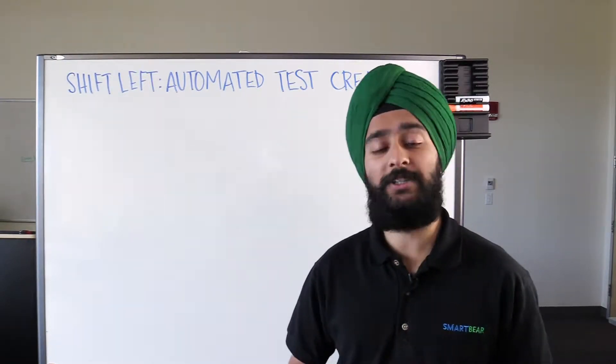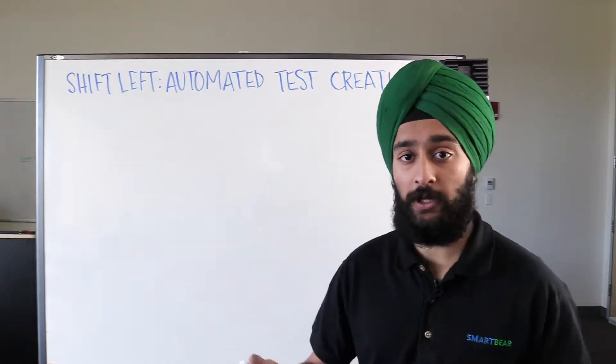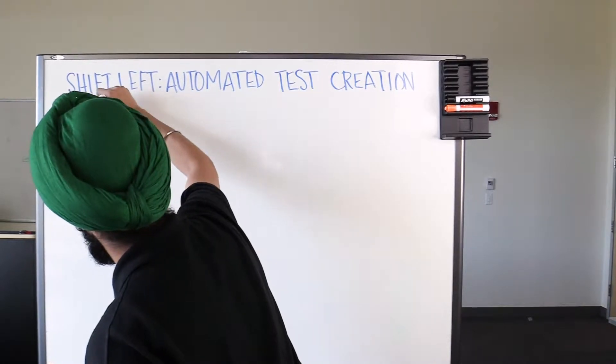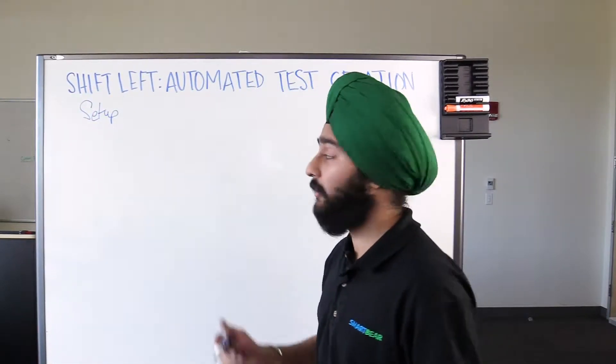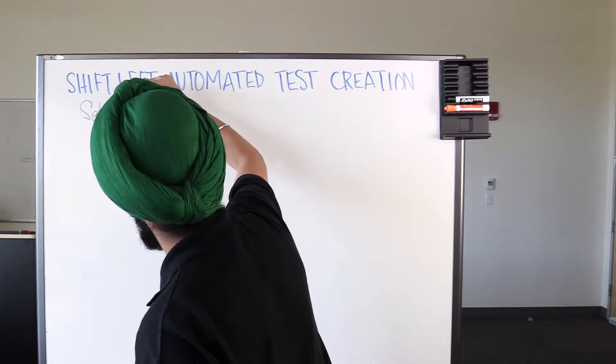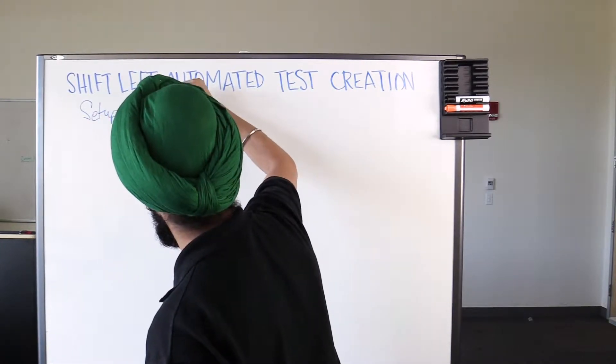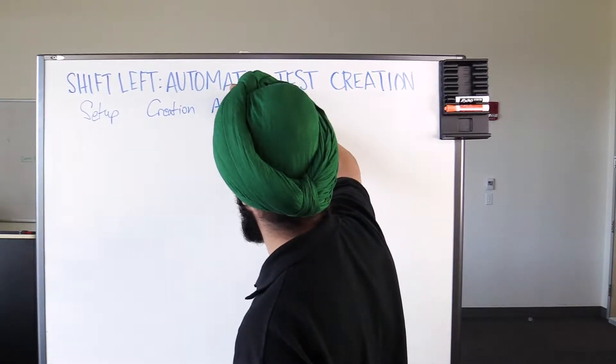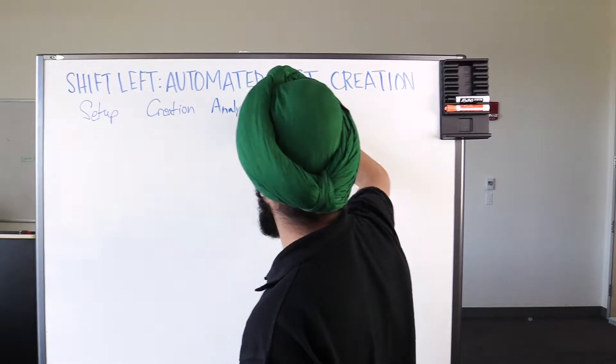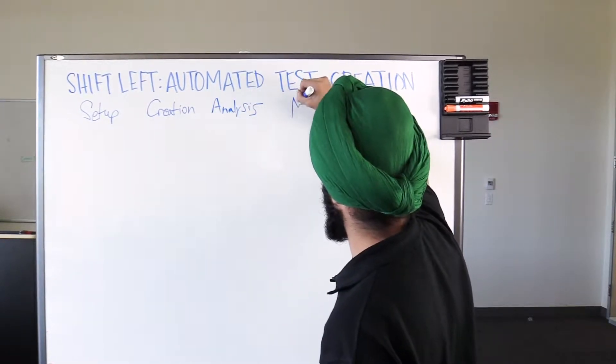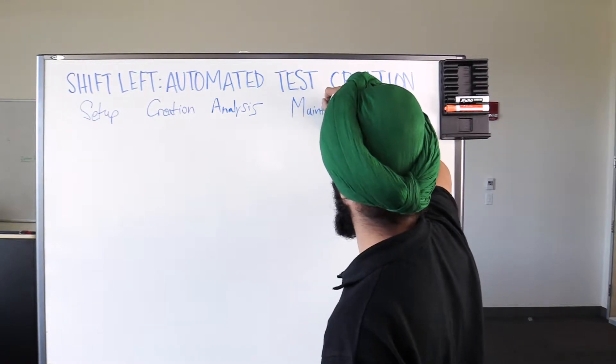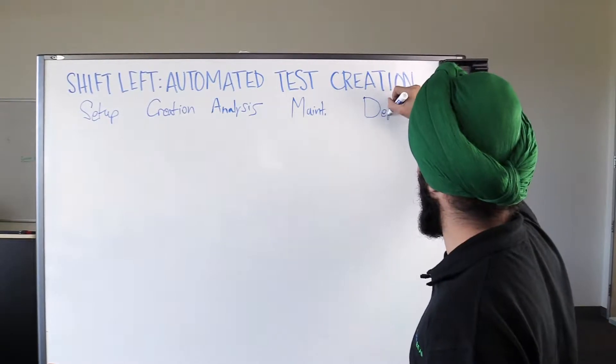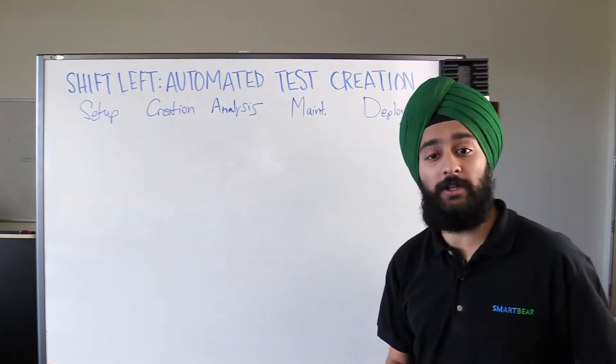We can describe our automated testing framework in a series of steps: the setup of initializing the environment, the creation of the testing framework and subsequent test cases, analyzing our initial testing, improving them, and the maintenance of our entire framework. After we do all of that, it plays right into how we deploy this testing architecture out to meet the needs of production.